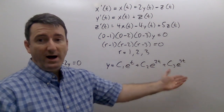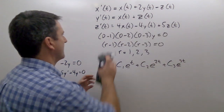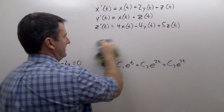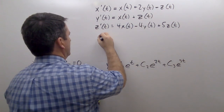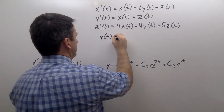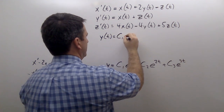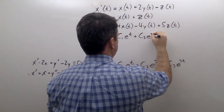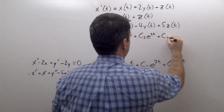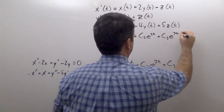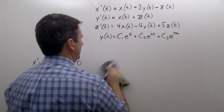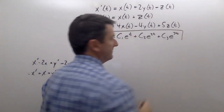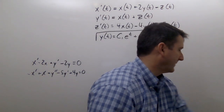So y(t) equals c1 e to the t plus c2 e to the 2t plus c3 e to the 3t. We can box that in — that's the first of our three solutions.